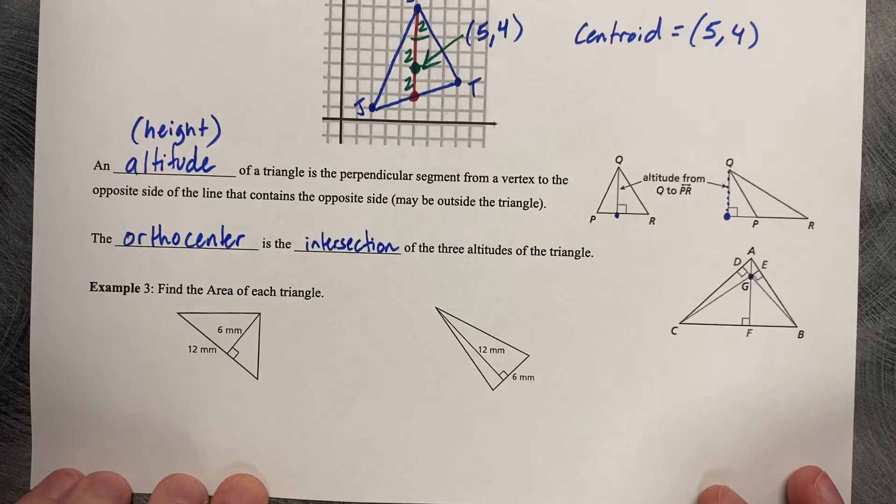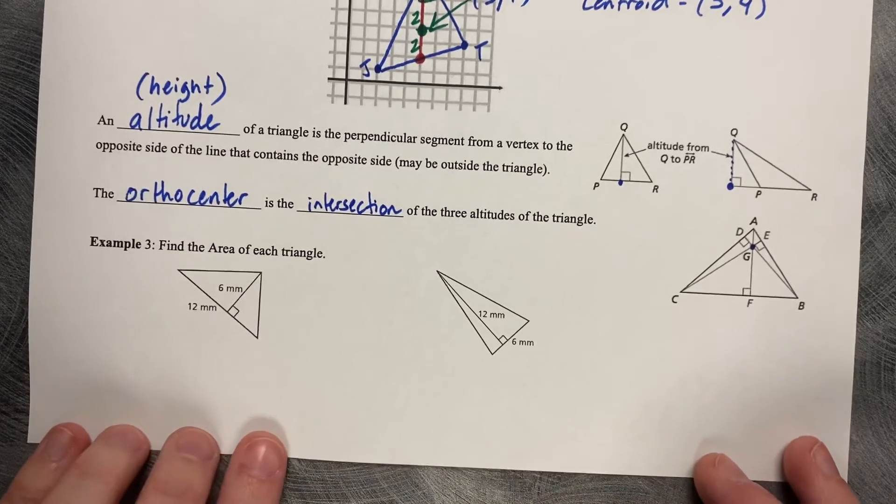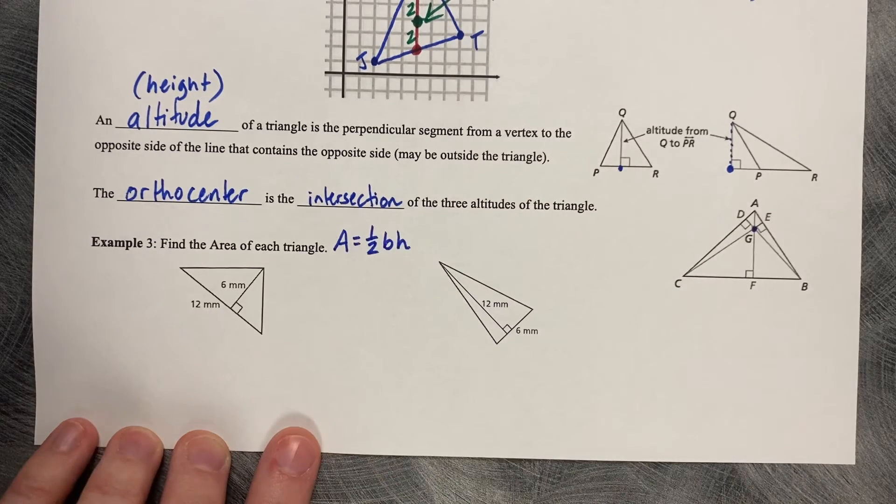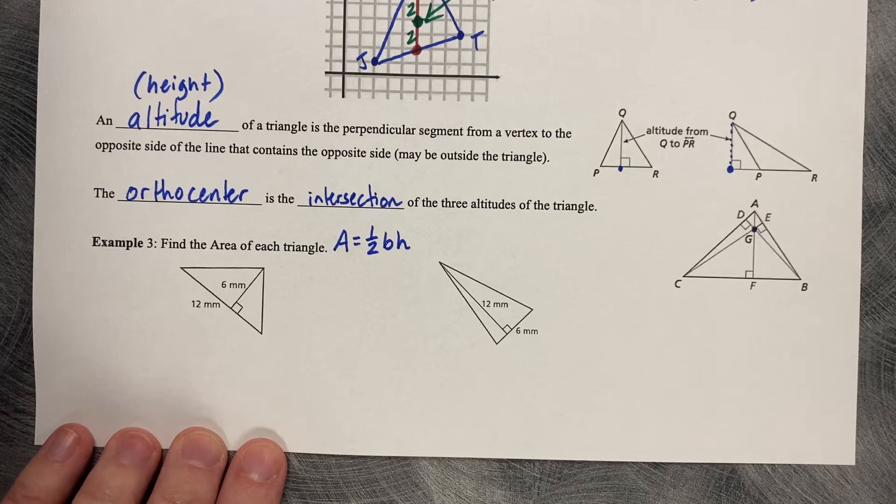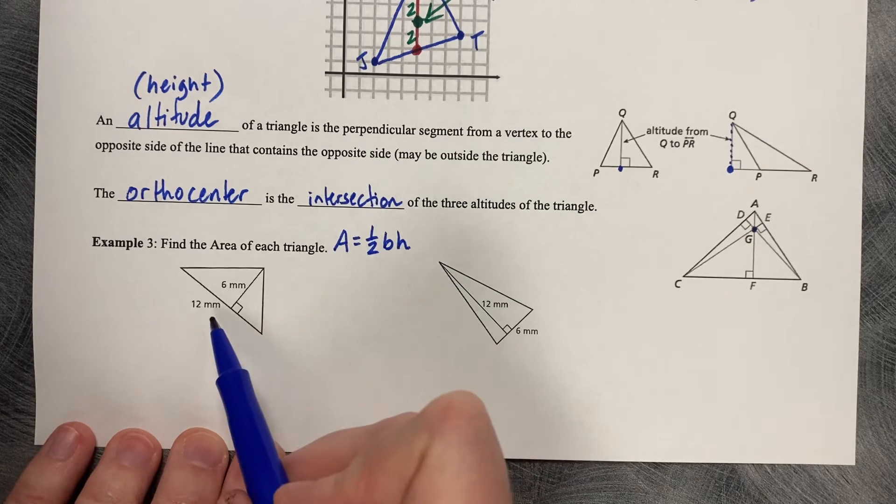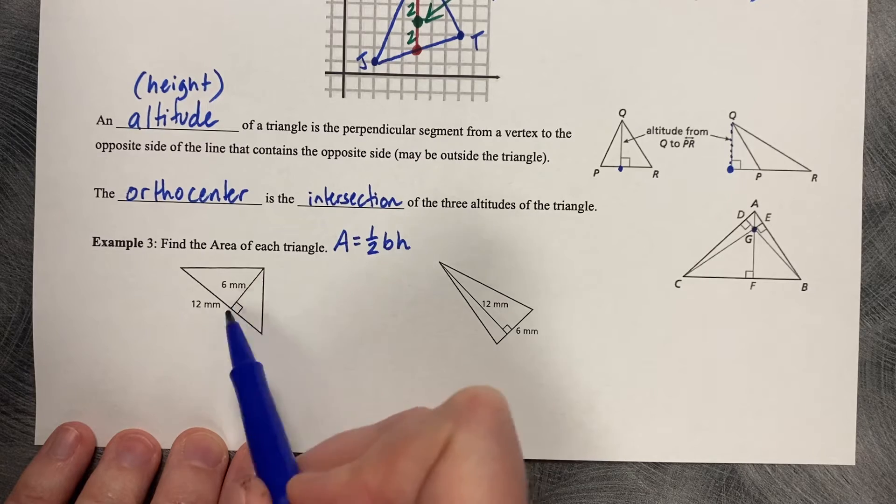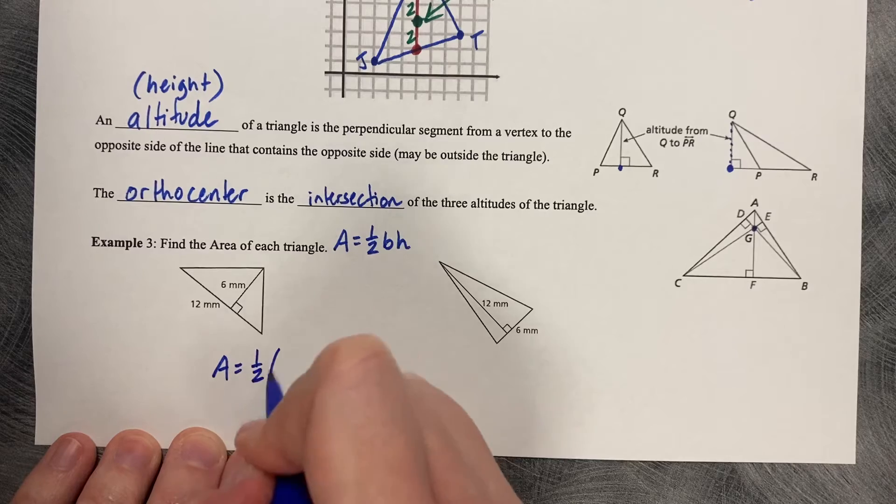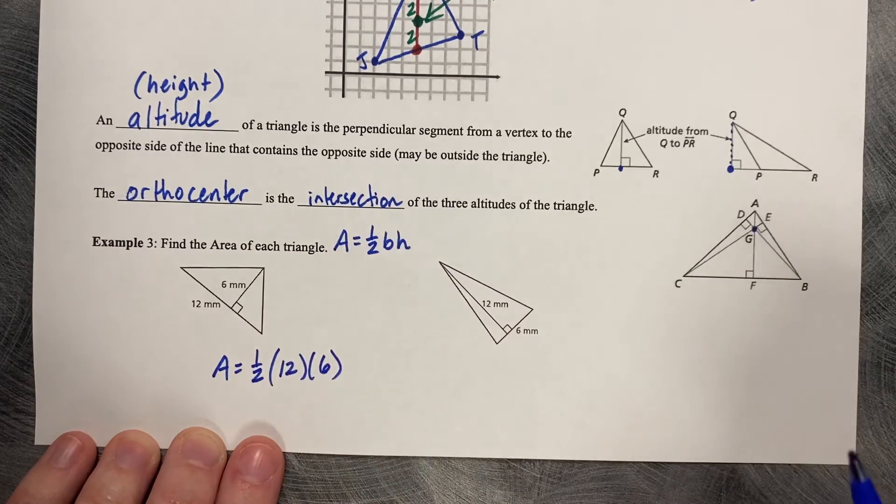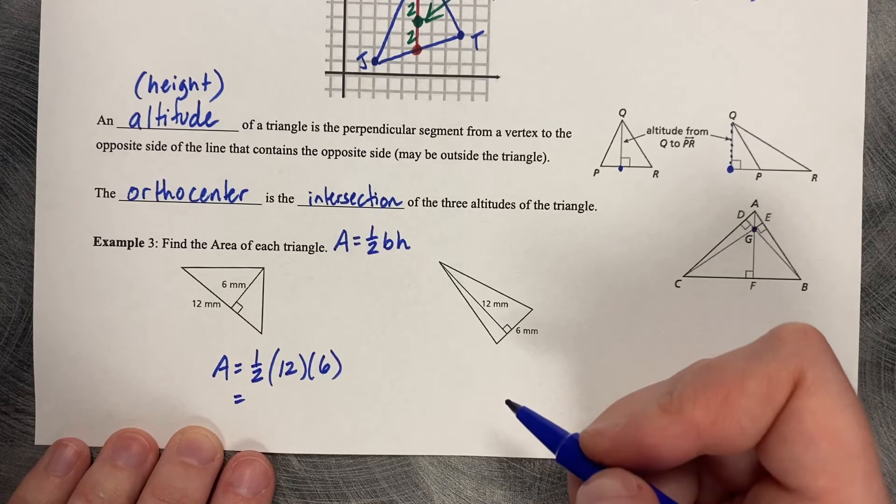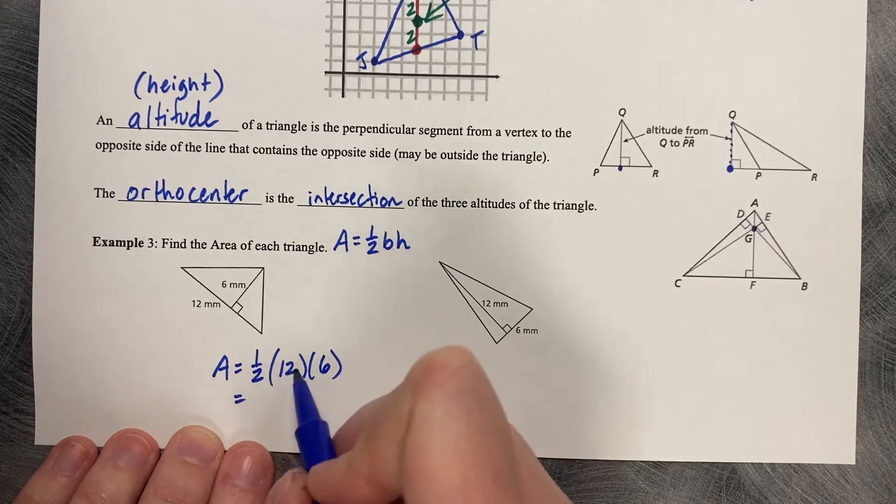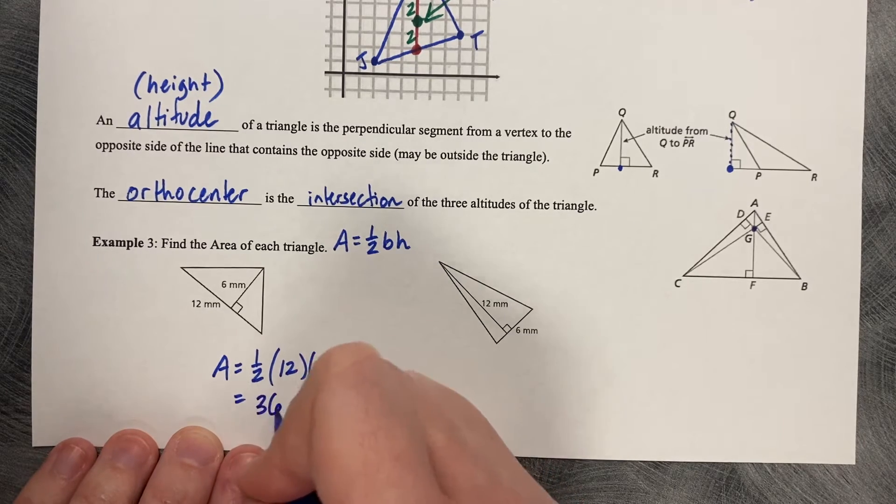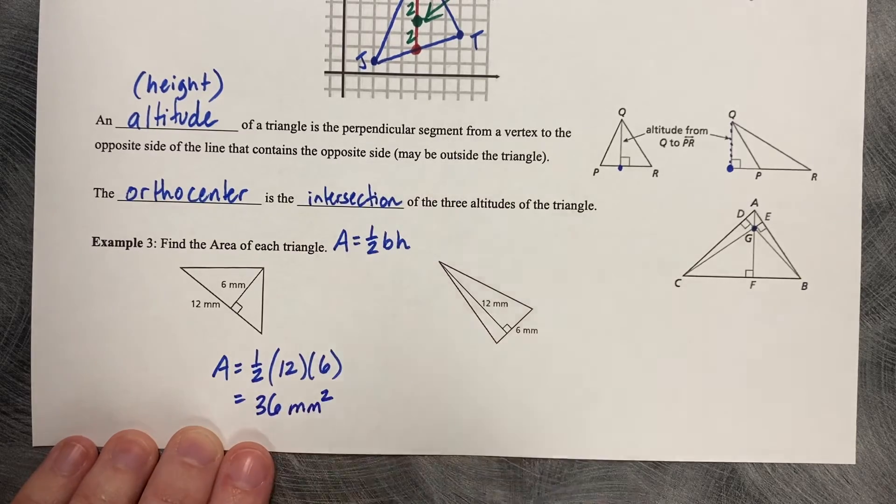So example three, find the area of each triangle. Recall that finding the area of triangles is one half the base times height, or you could say base times height divided by two is another way to say that. So in this case, we've got 12 is the base and height or the altitude is six. So area is one half, 12 times six. And you can punch that into a calculator all at once if you would like to. You can divide, you could do 12 times six and then divide by two, whatever you would like to do. But you'll get 36. And this is millimeters and it's area, so it's squared.